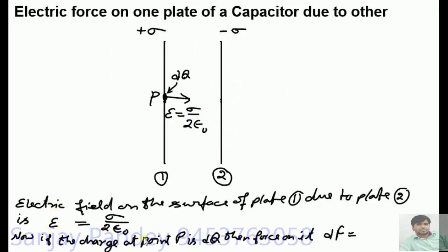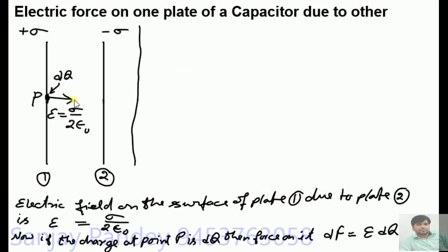Now, if the charge on point P is dq, then the force on it is given by dF = E · dq. The direction of this force will be along the direction of the electric field, because dq is positive in nature. If dA is the elementary area of plate 1 at point P, then dq = σ dA.